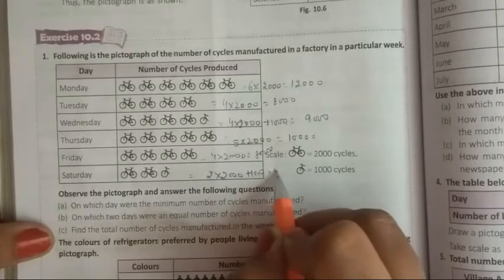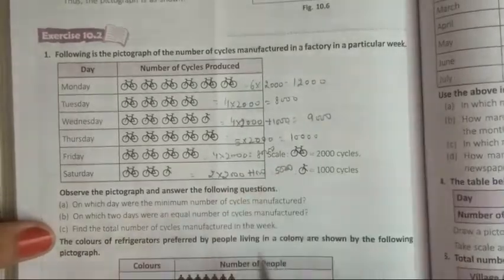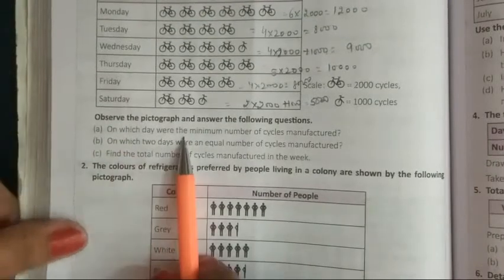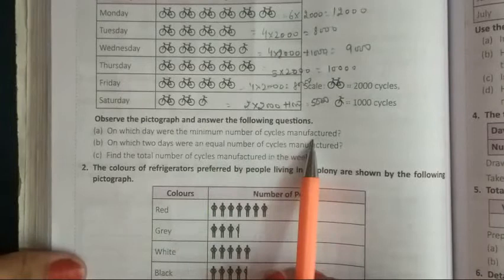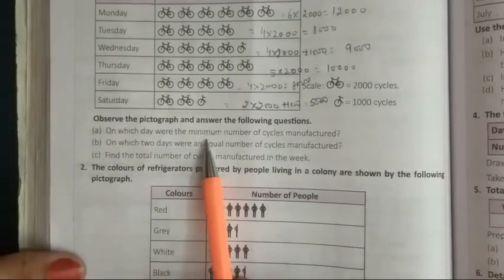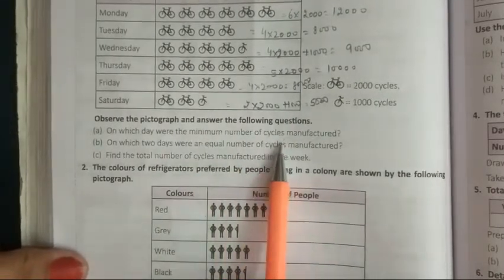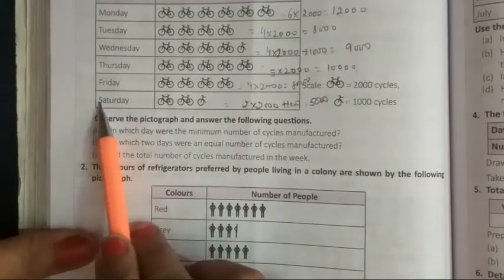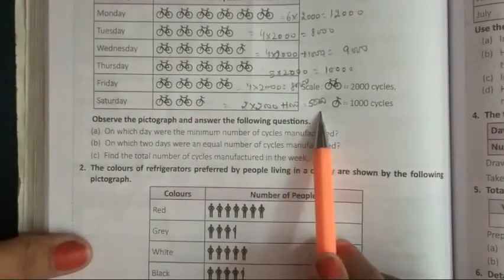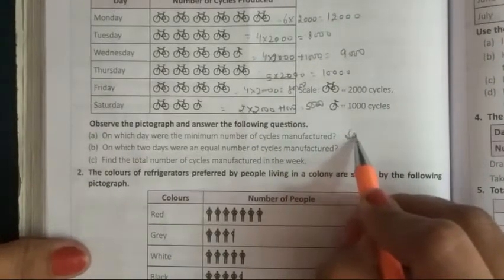Two, four and one, 5,000. First question what they give you? On which day were the minimum number of cycle manufactured? Ki kis din? Sabse kam cycle banai gai. Kis din? Saturday. Saturday ko sabse kam data hai, hamara kitna? 5,000. To hum yaha kya likhenge? Saturday.